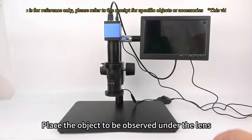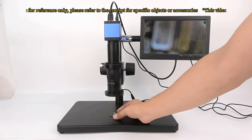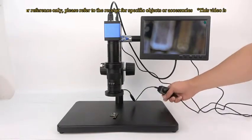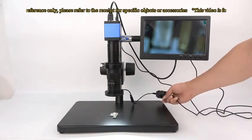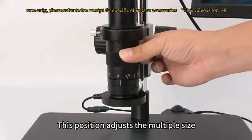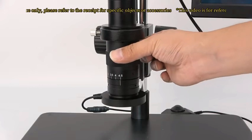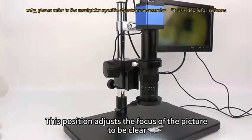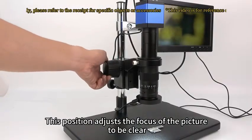Place the object to be observed under the lens. And turn on the light source. This position adjusts the multiple size. This position adjusts the focus of the picture to be clear.